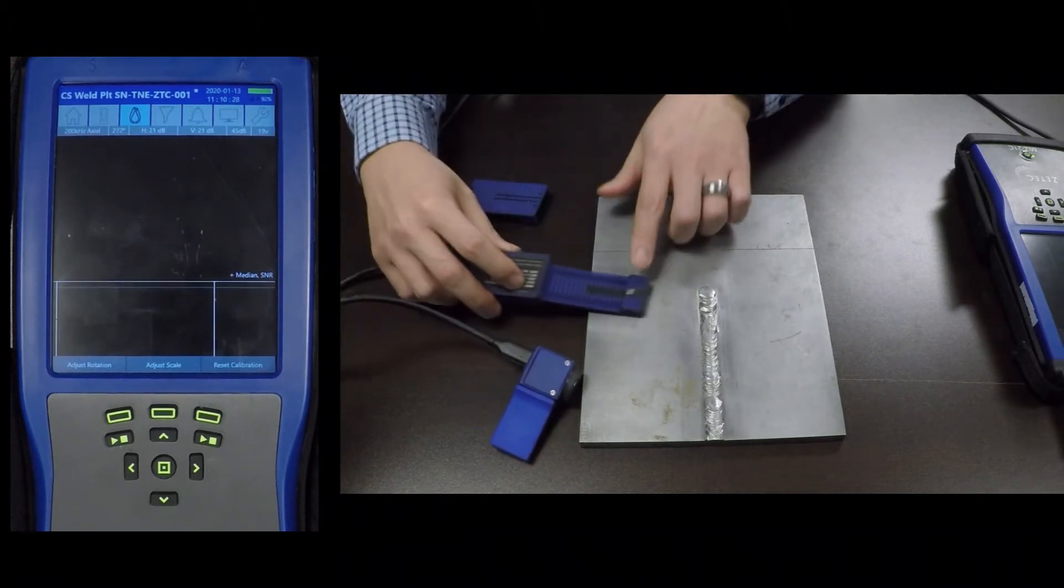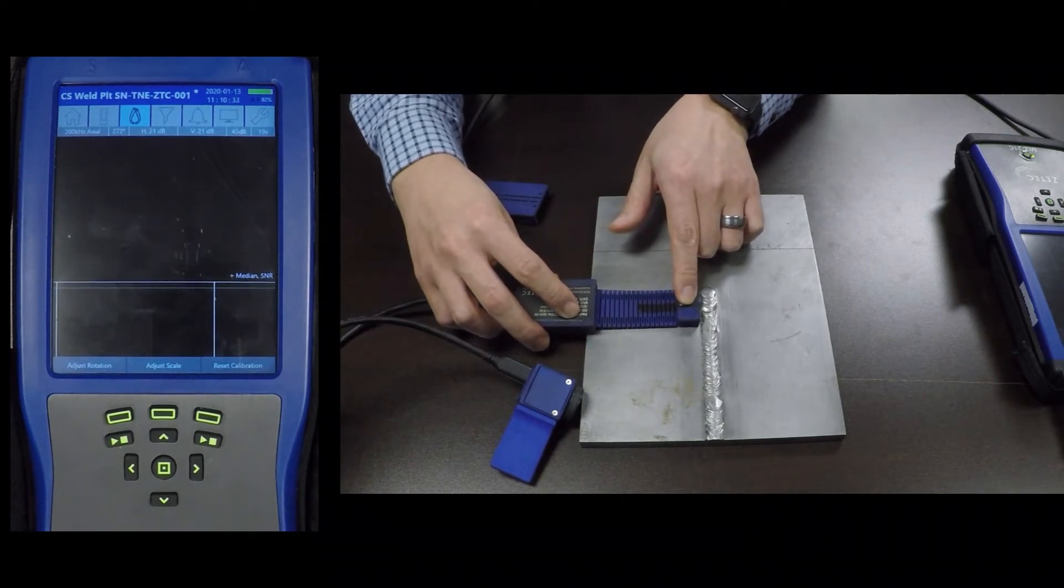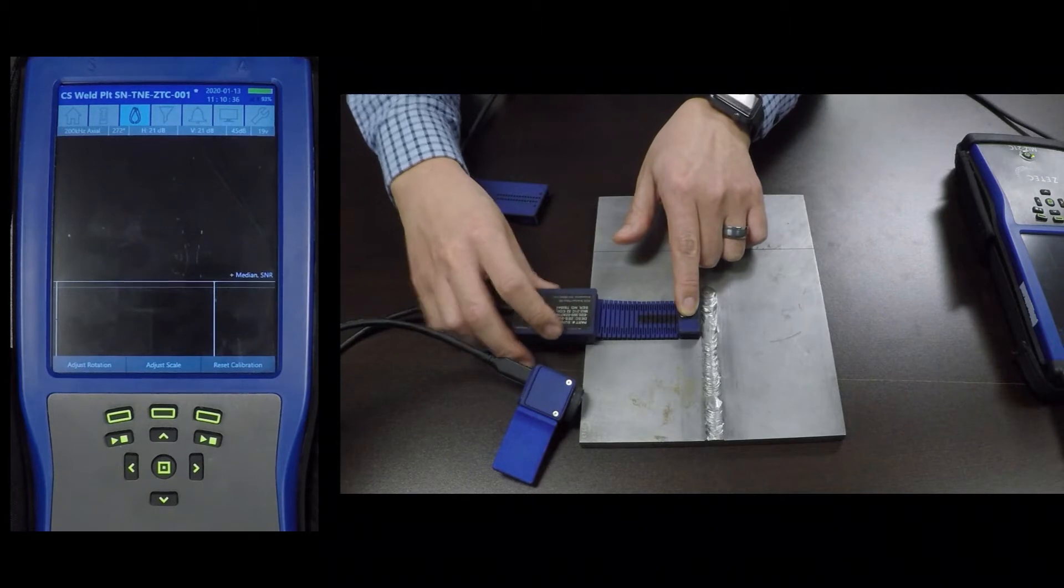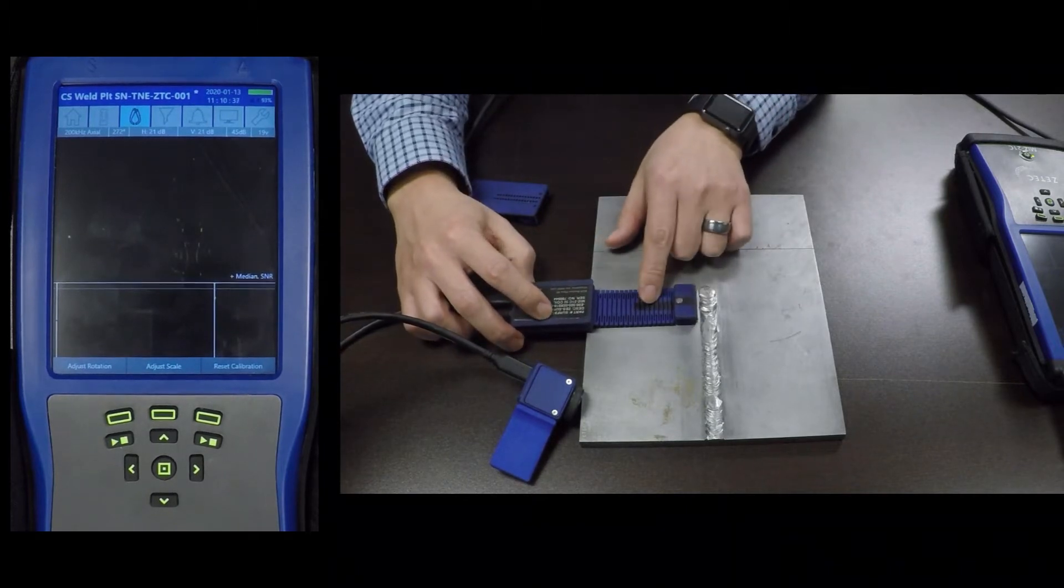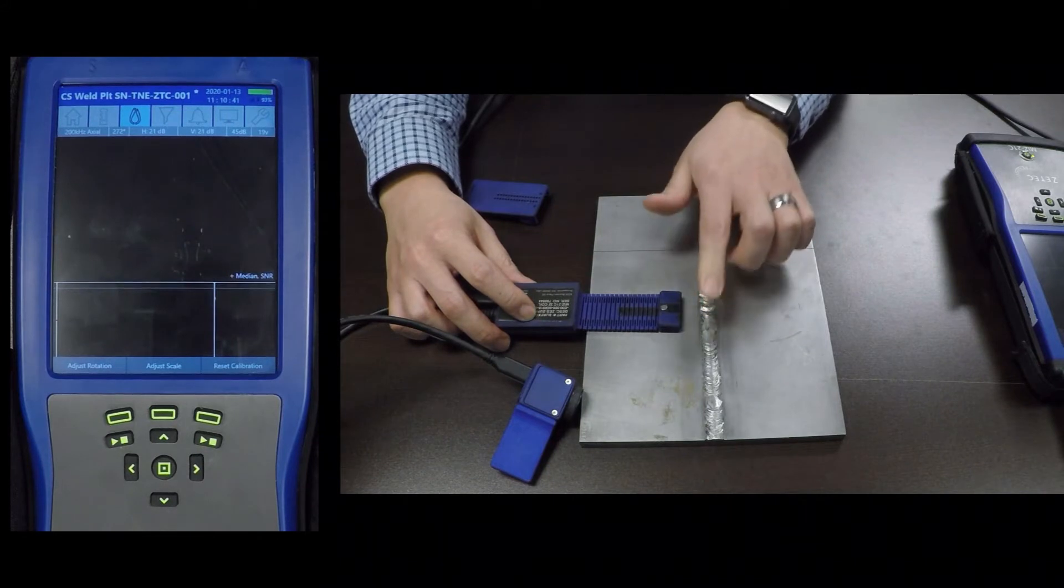These plus points can be used to get into the toe area of the weld, where it can be difficult to scan with just the array coils, especially for welds with high crowns.